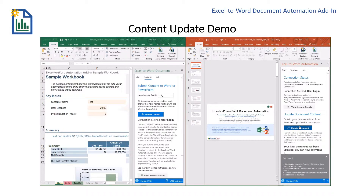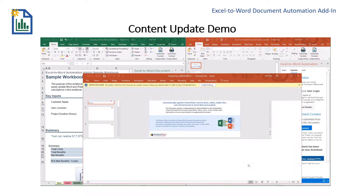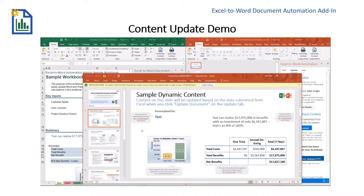I'll go over to PowerPoint and update the content. When updating PowerPoint, you need to download the updated file. I'll go ahead and download the updated PowerPoint file. When that opens, we'll see that the changes have been made to the PowerPoint document. If I look at the second page, I can see that the customer name was changed to "test" and that the chart and the tables have been updated.